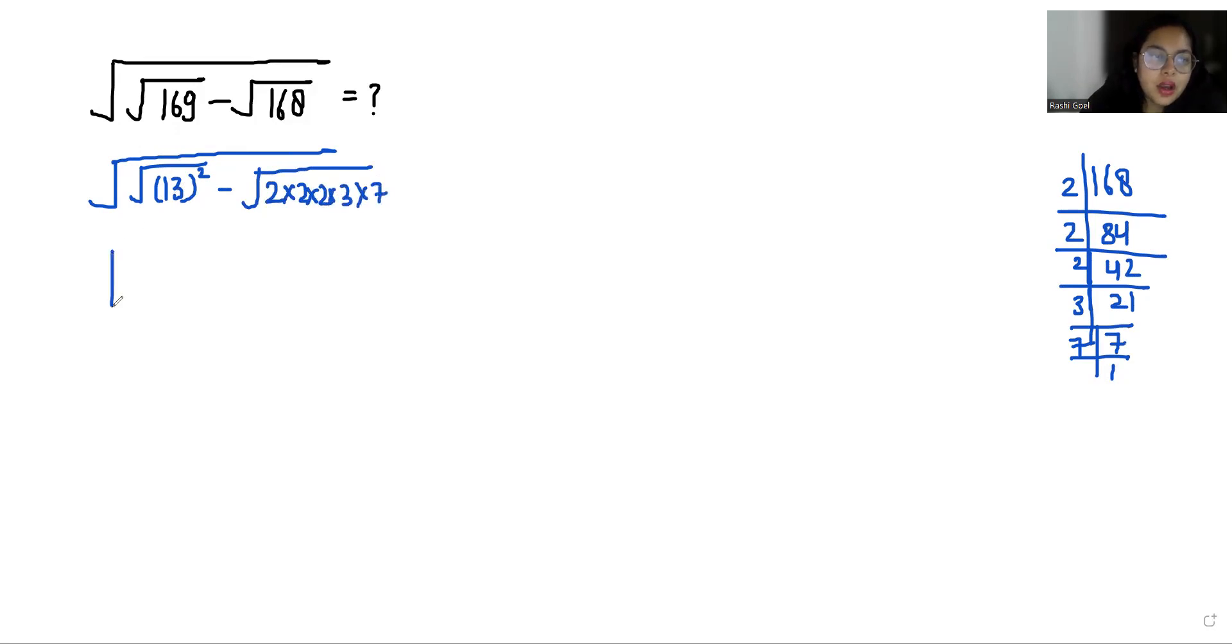Now under square root, with the help of this square root, this eliminates. So 13 minus, we can take out 2 outside, so what is left is square root of 2 times square root of 3 times square root of 7.